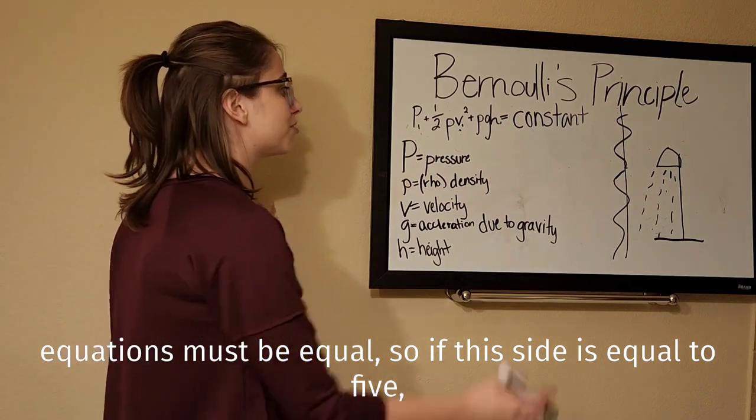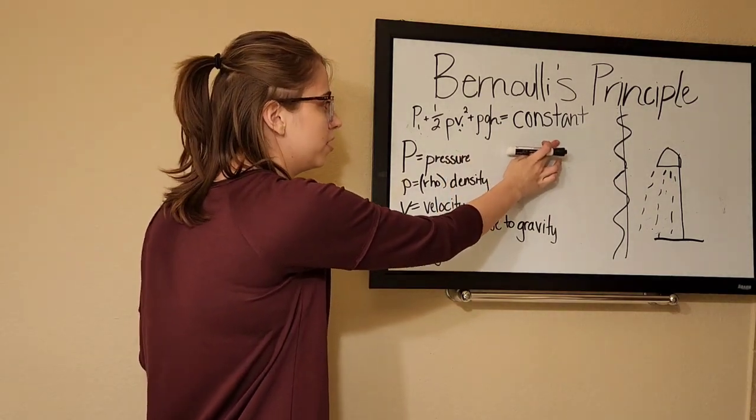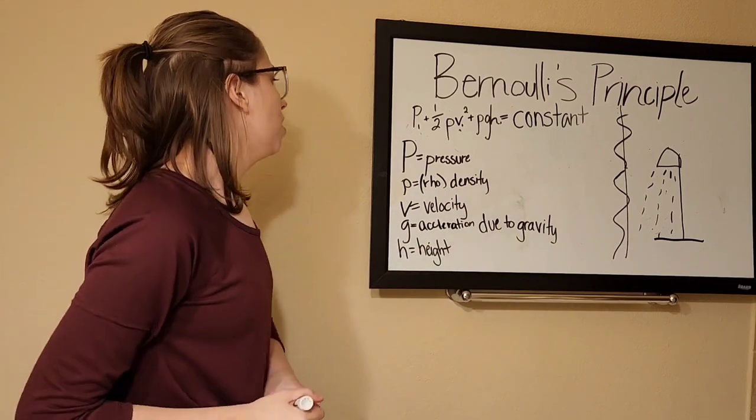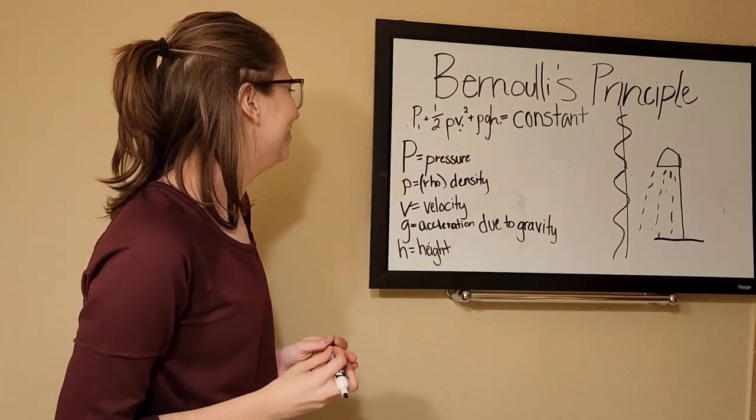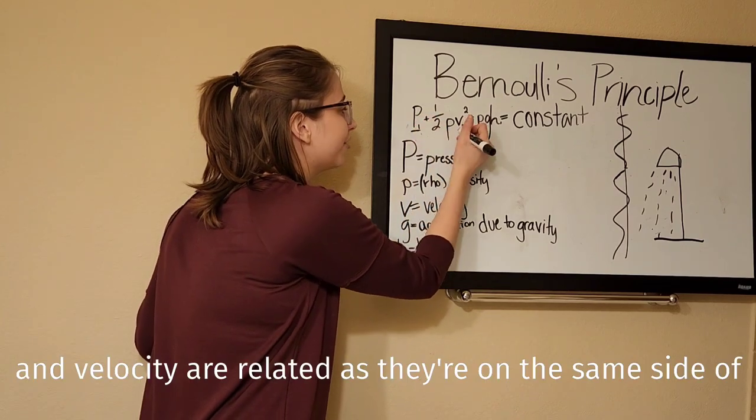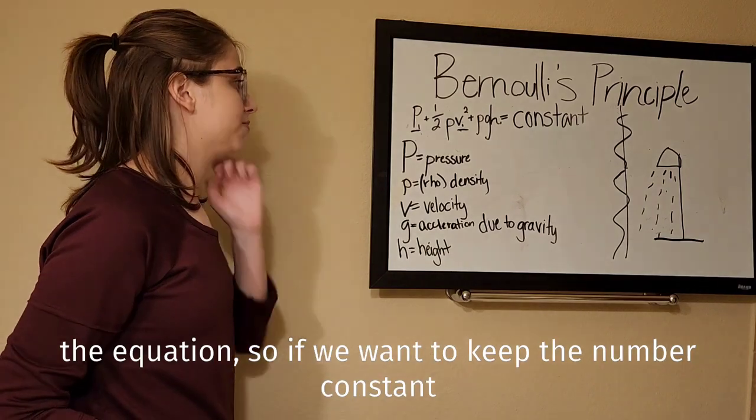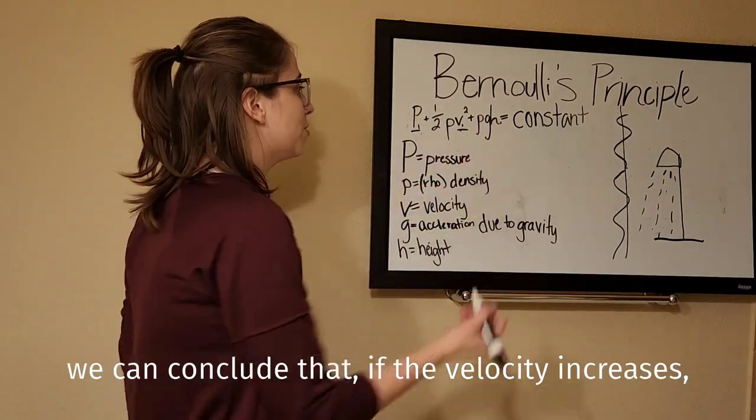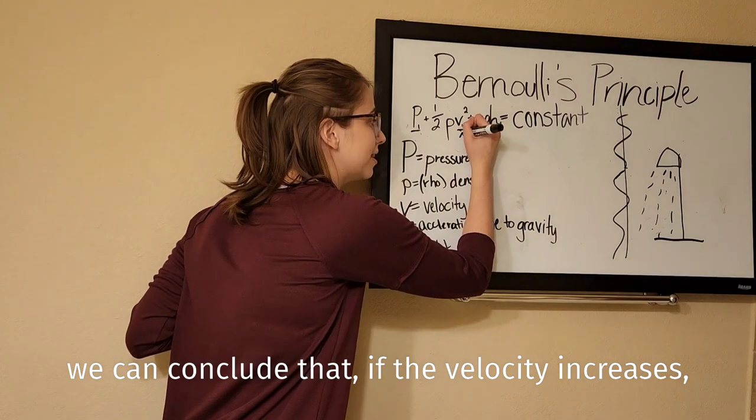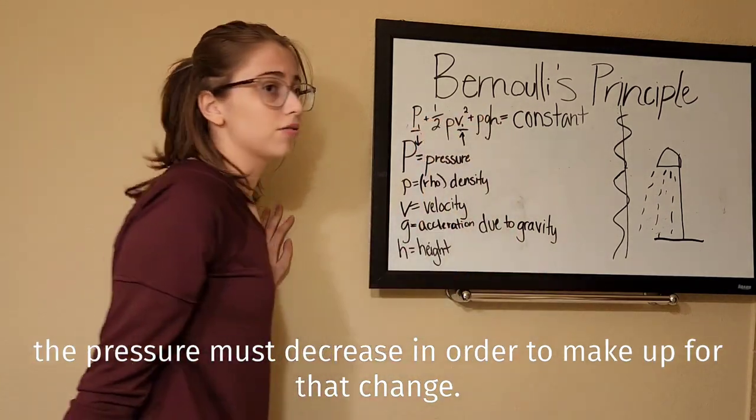So if this side equals 5, this side must also equal 5. We'll note that pressure and velocity are related as they're on the same side of the equation. So if you want to keep the number constant, we can conclude that if the velocity increases, the pressure must decrease in order to make up for that change.